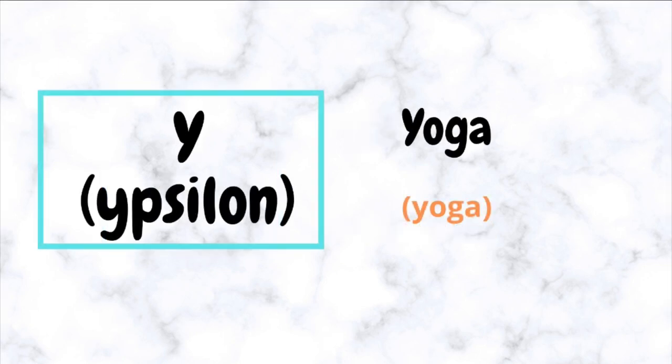Y — pronounced as 'Ypsilon.' The letter Y has the sound of 'ee.' For example: Yoga.